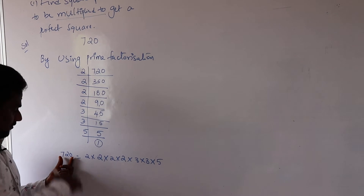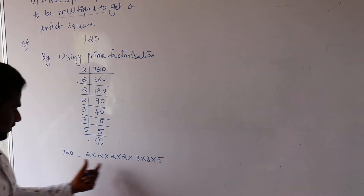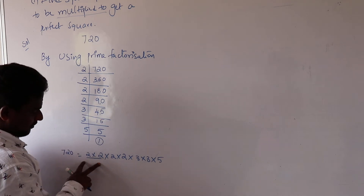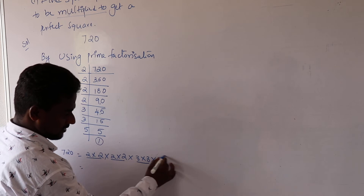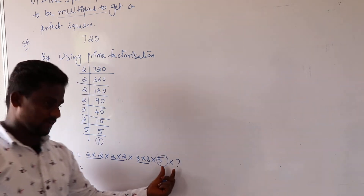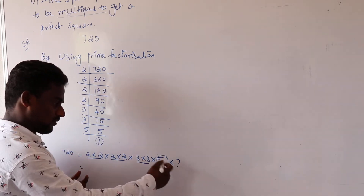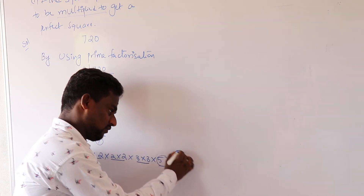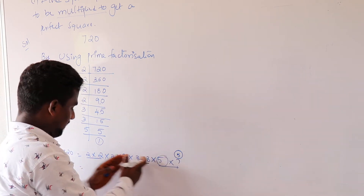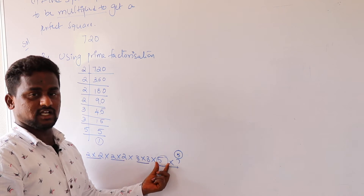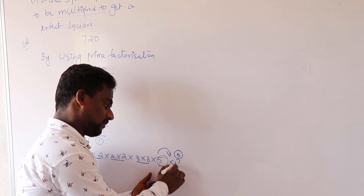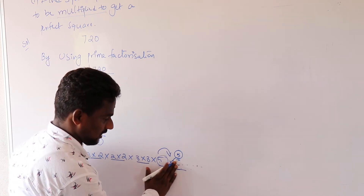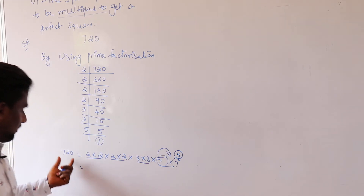Now, to get a perfect square we want all prime factors to have pairs. Here 2 and 2 form a pair, another 2 and 2 form a pair, and 3 and 3 form a pair. But 5 is not having any pair. That is why we need to multiply by 5 so that 5 also gets a pair, making all factors paired and the number a perfect square.